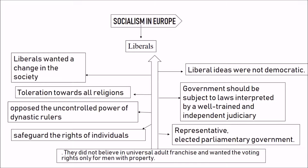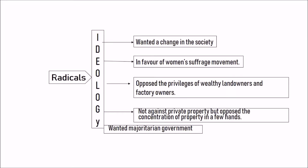Liberals wanted toleration towards all religions — they wanted all religions to be respected equally with a secular attitude. They were completely against the uncontrolled powers of dynastic rulers and the monarch. They wanted rights of individuals safeguarded, an independent autonomous judiciary, and elected representatives in parliament. However, they were not democratic — they wanted voting rights only for men with property, not for women.